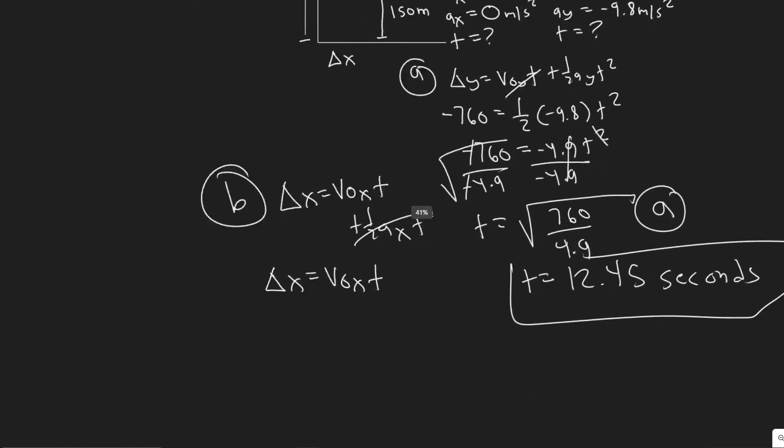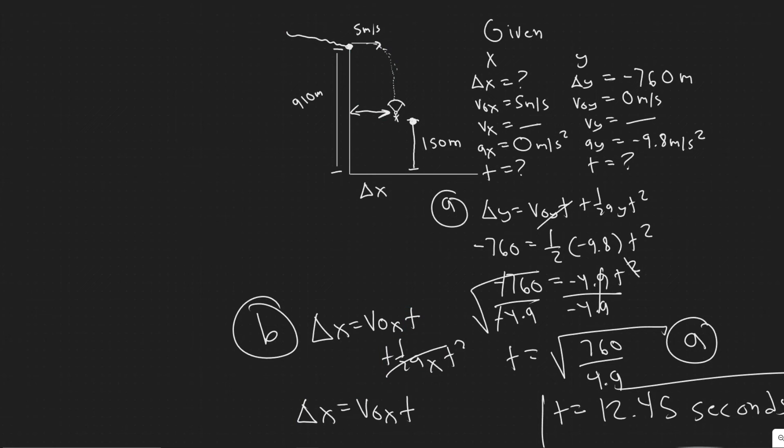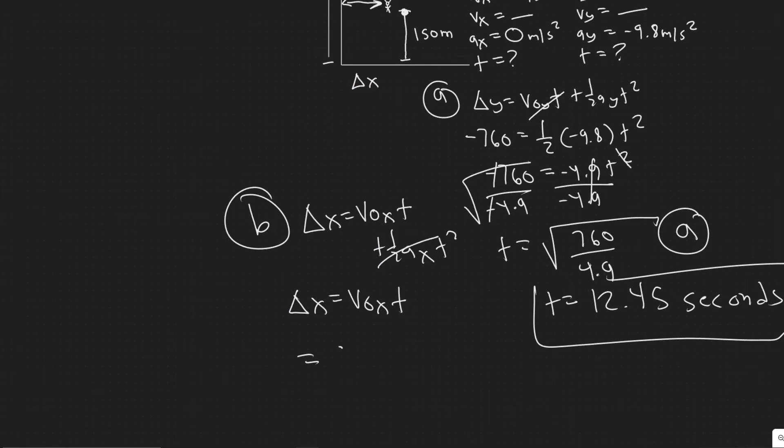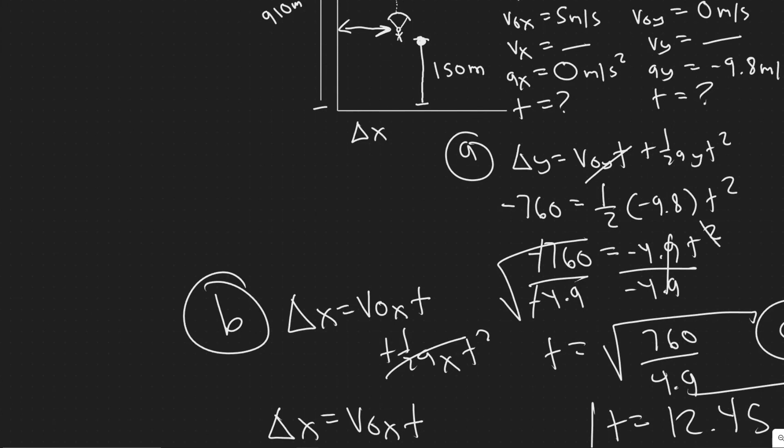We actually know what the time is, which is what we solved for in the last problem. We know how long this interval is. Since acceleration is 0, you can just multiply it by the 5. 5 times 12.45, that'll give you your change in the X. Doing this, you're going to get 62.27 meters, about that. You can round however you want. You can just say about 62 meters. It doesn't really matter. Or I'm just going to write just 62.3 meters. Keep in mind, I use this rounded value here, so you might get something a little different. But about 62.3 meters, that's going to be how far they are. This distance right here.